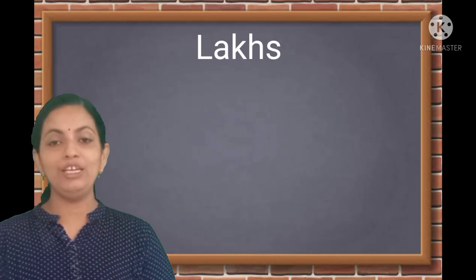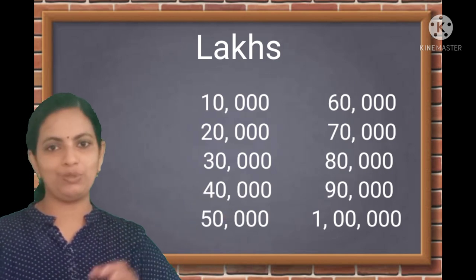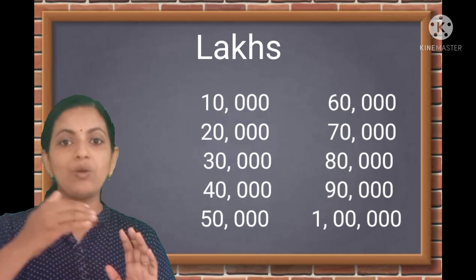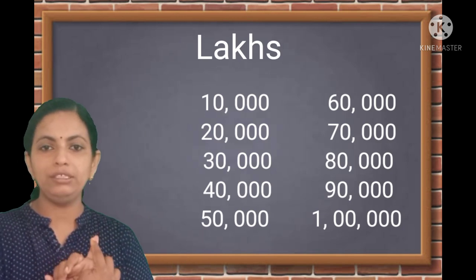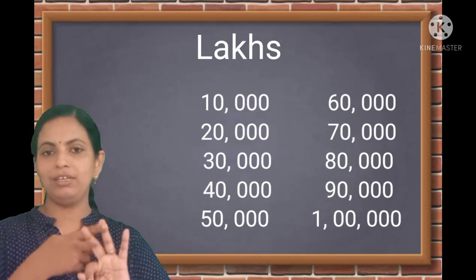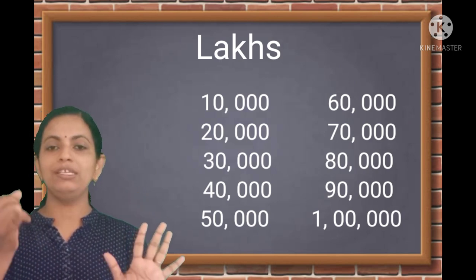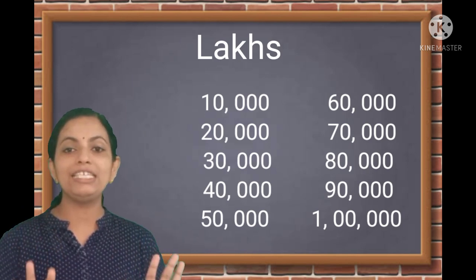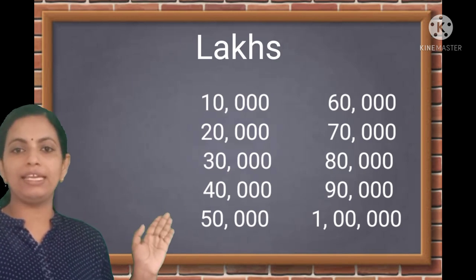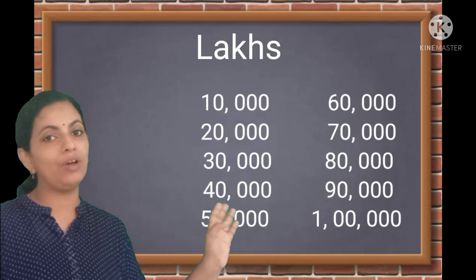10,000 is the smallest 5-digit number — it's 1 with four zeros. Starting from 10,000 and adding one more 10,000 each time: 10,000, 20,000, 30,000, 40,000, 50,000, 60,000, 70,000, 80,000, 90,000. When we add one more 10,000 to 90,000, it becomes a number with 1 followed by five zeros.